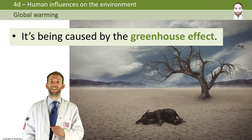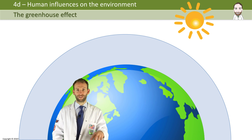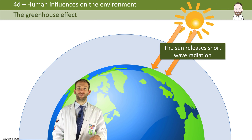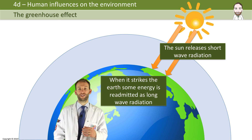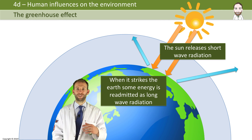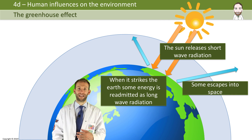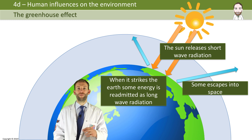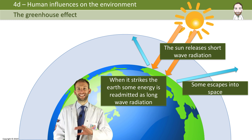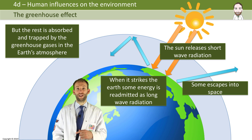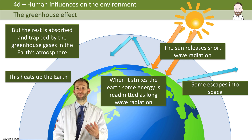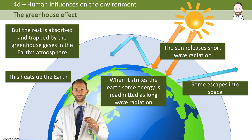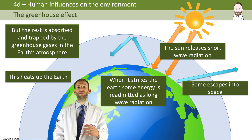The greenhouse effect works like this: when the Sun releases shortwave radiation down to Earth, some of it is absorbed but a lot is reflected off the surface. Some of that reflected radiation escapes back into space, but the rest is absorbed and trapped by the greenhouse gases in our atmosphere, which heats up the Earth. We need to trap some heat — otherwise the Earth would be an ice ball — so some atmospheric greenhouse gases are necessary.